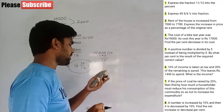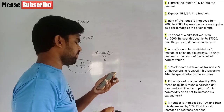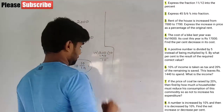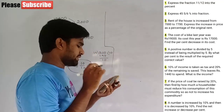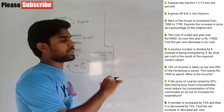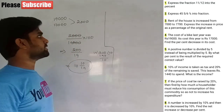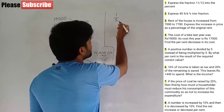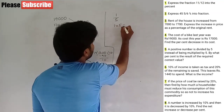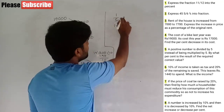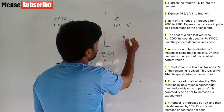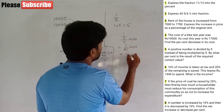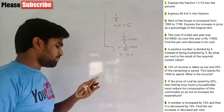Question 5: a positive number is divided by 5 instead of being multiplied by 5. By what percent is the result less than the correct value? For example, take number 1. Dividing: 1 by 5. Multiplying: 1 into 5 is 5. Percentage error is (1/5) divided by 5, into 100, which equals 1/25 into 100. Therefore the answer is 4 percent.